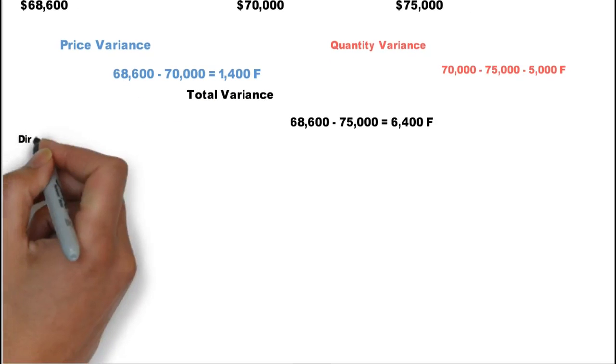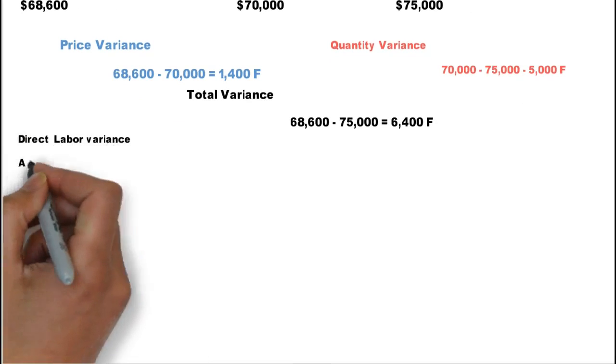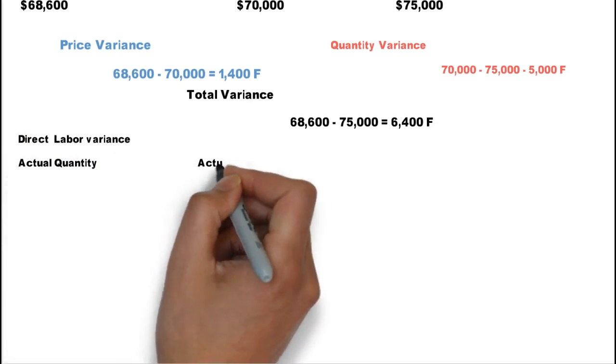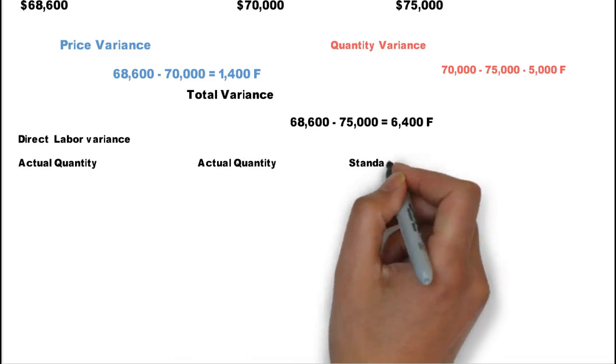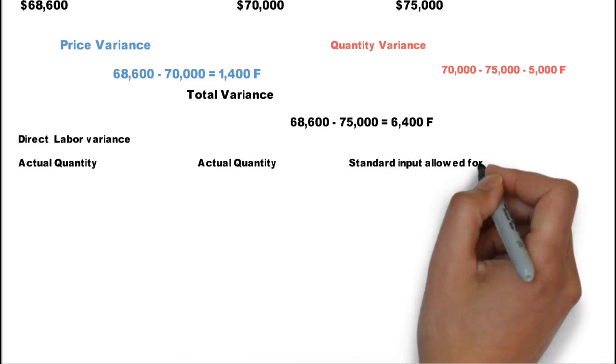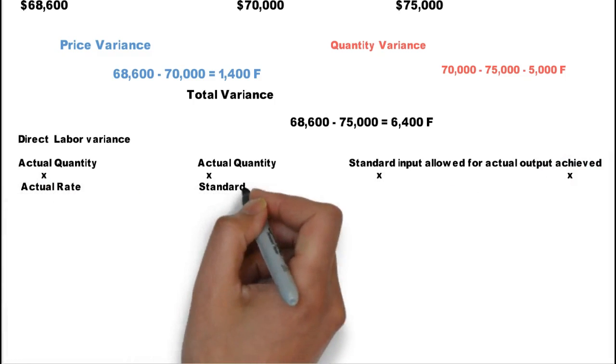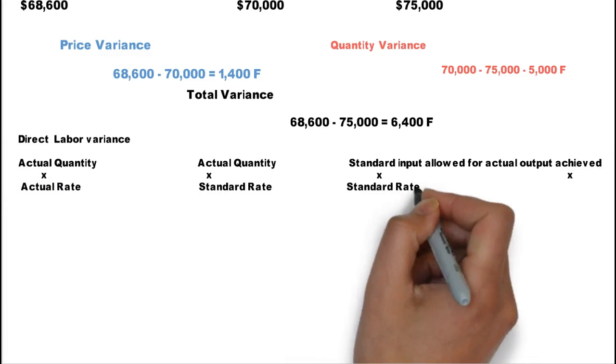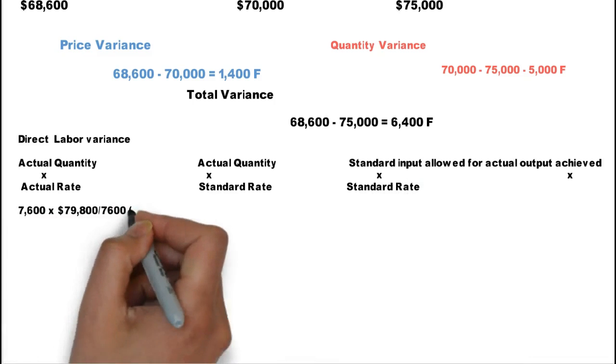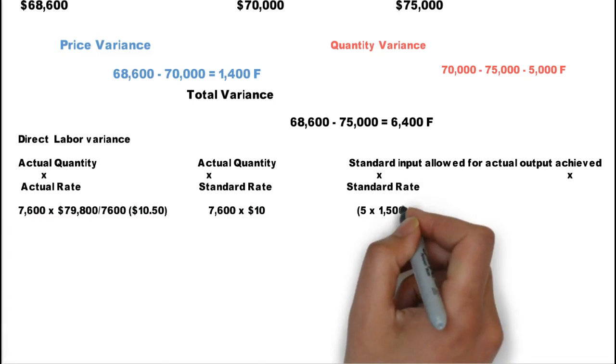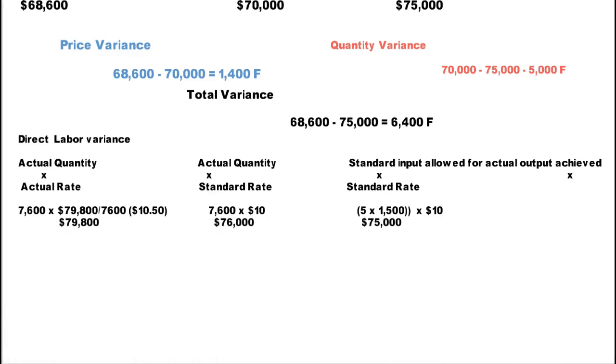We do the same approach now for the direct labor variance. We set it up again: actual quantity times actual rate, actual quantity times standard rate, and standard input allowed for the actual output achieved times the standard rate. And again, we have 7,600 hours at $10.50 an hour for $79,800. The actual quantity, 7,600 times the standard rate, straightforward.